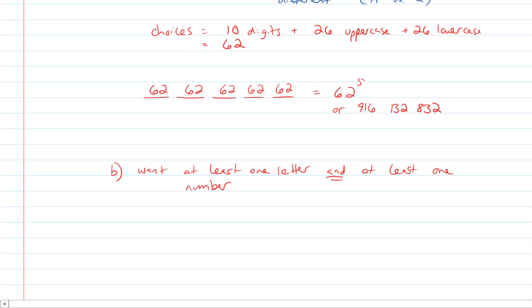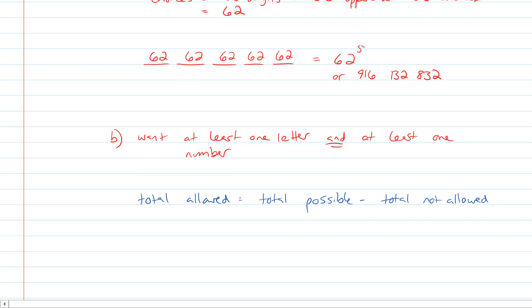So the straightforward way to do this is to use the rule that we've looked at previously, which is the total allowed is equal to the total possible minus the total not allowed. Now we'll take a look at why other methods tend to be a little bit more difficult than this.